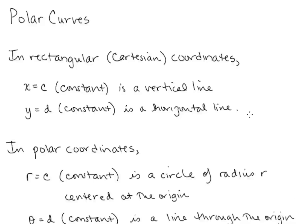Remember that in rectangular coordinates, Cartesian coordinates, if we have the equation x equals c, where c is a constant, that gives us a vertical line. And similarly, y equals d gives us a horizontal line, where d is constant.